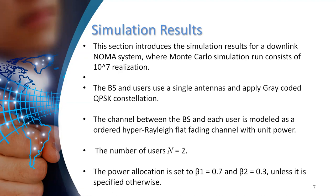And the power allocation coefficients are set to β1 = 0.7 and β2 = 0.3, unless it's specified otherwise.